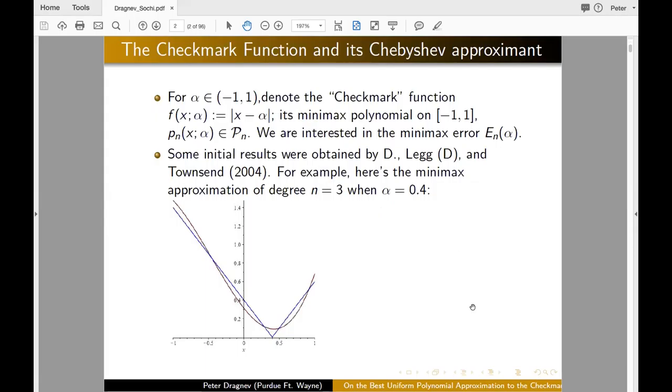So this is maybe the simplest function that is not a polynomial that has the singularity. This is the checkmark function, which is absolute value of x minus alpha. And let f of x alpha denote this function and its minimax polynomial then depends that the Chebyshev norm minimization is P_n of x alpha. And we're interested in figuring out the minimax error in terms of alpha. So I should have said that this is a joint work with Alan Legg and Ramon Uribe.